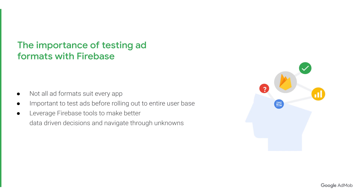Firebase tools can enable you to make better data-driven decisions for your app and navigate through the unknowns. Using Firebase, you can A/B test the performance of new ad formats with a small subset of users. You can observe the results of the test and review recommendations from Firebase to see how well the new ad format is performing. Once you are confident that the changes will improve your ad business, you can then roll out the changes to the majority of your user base with the click of a button.